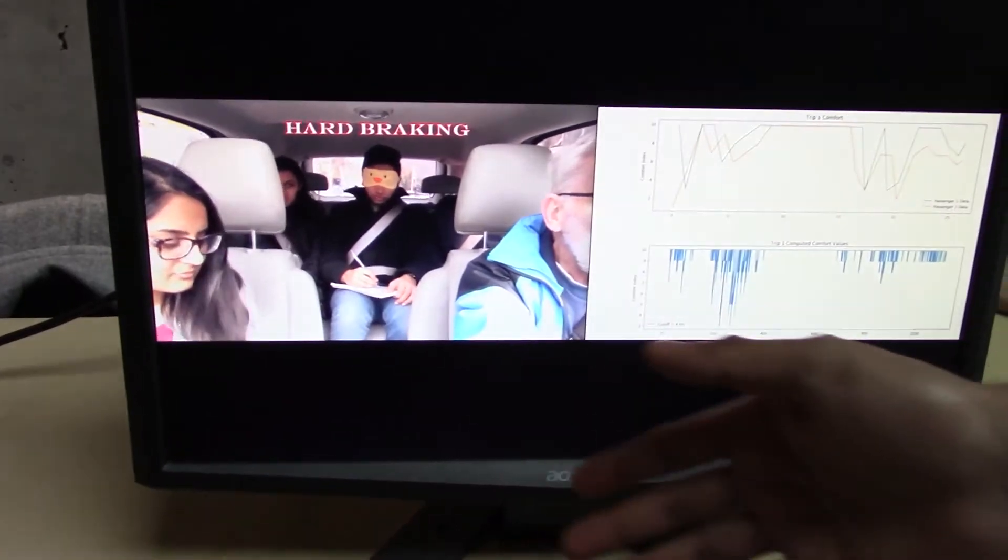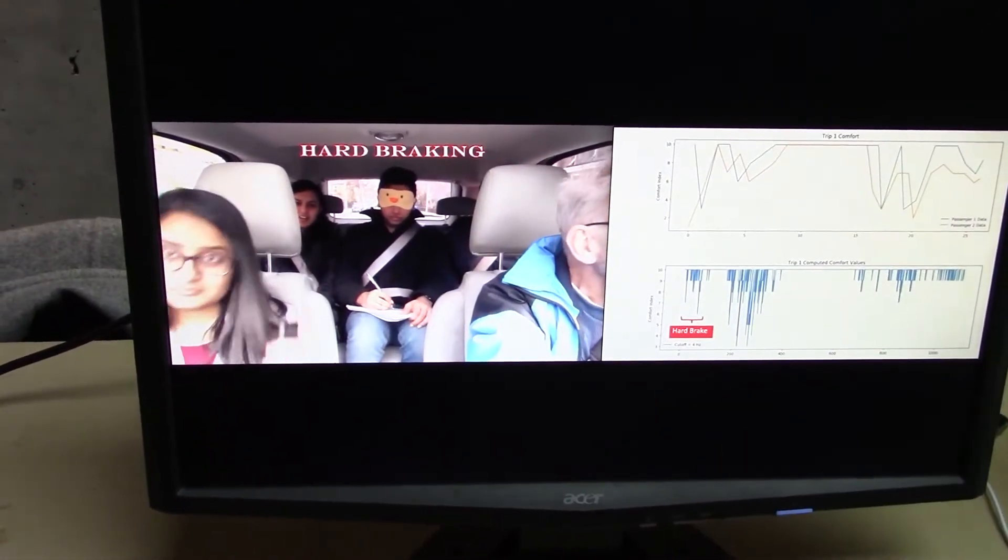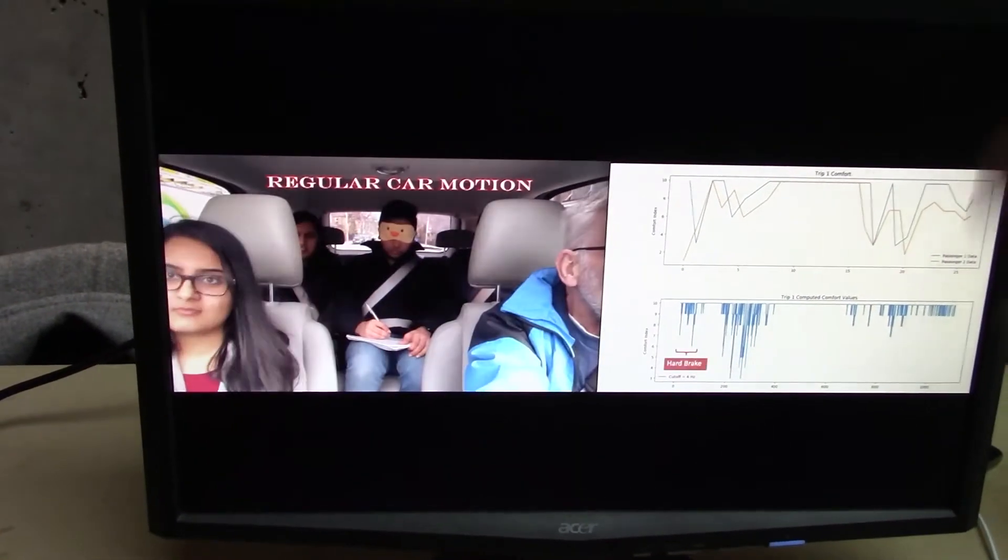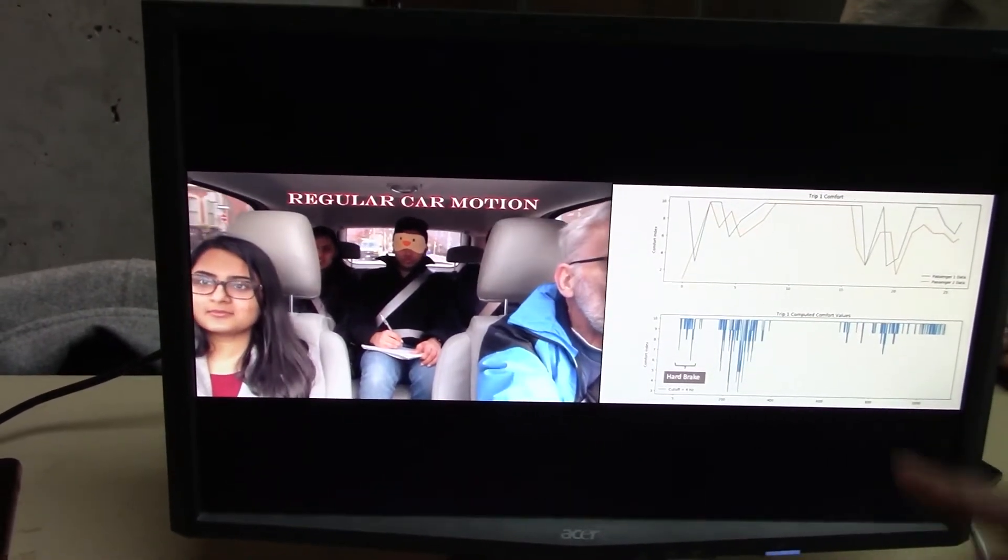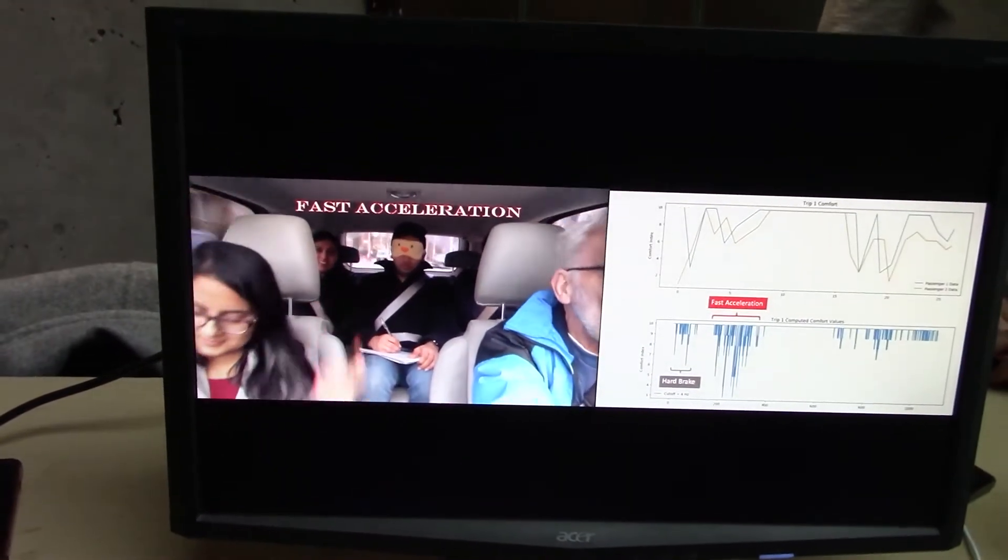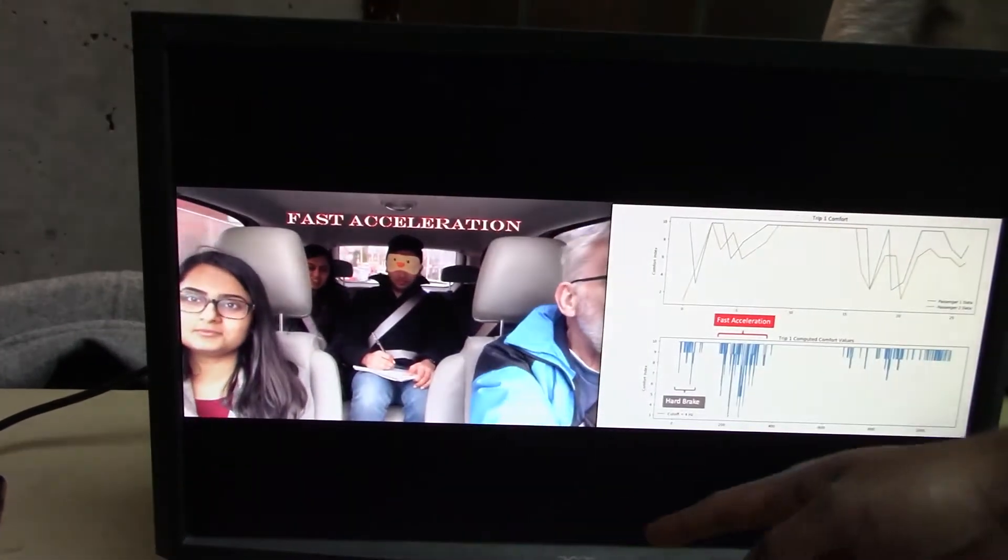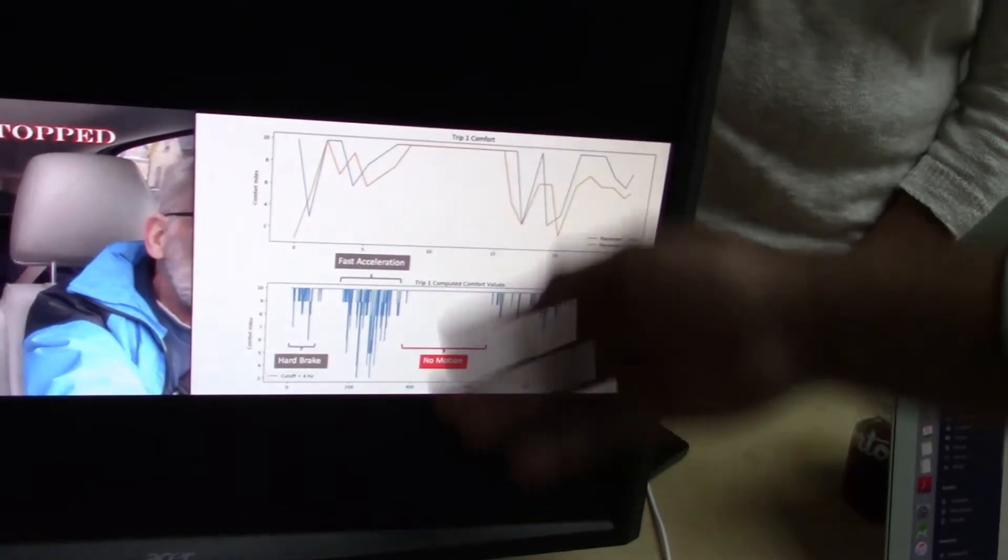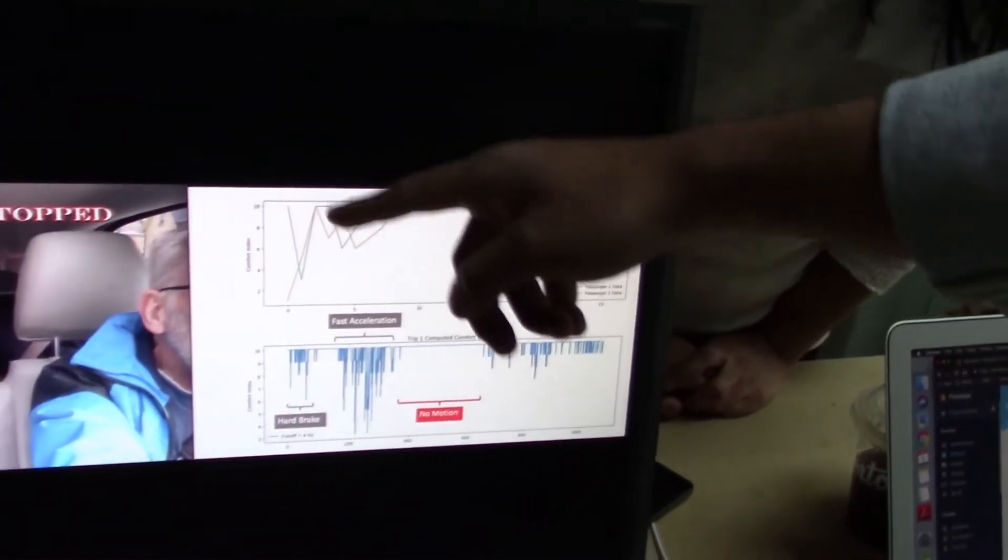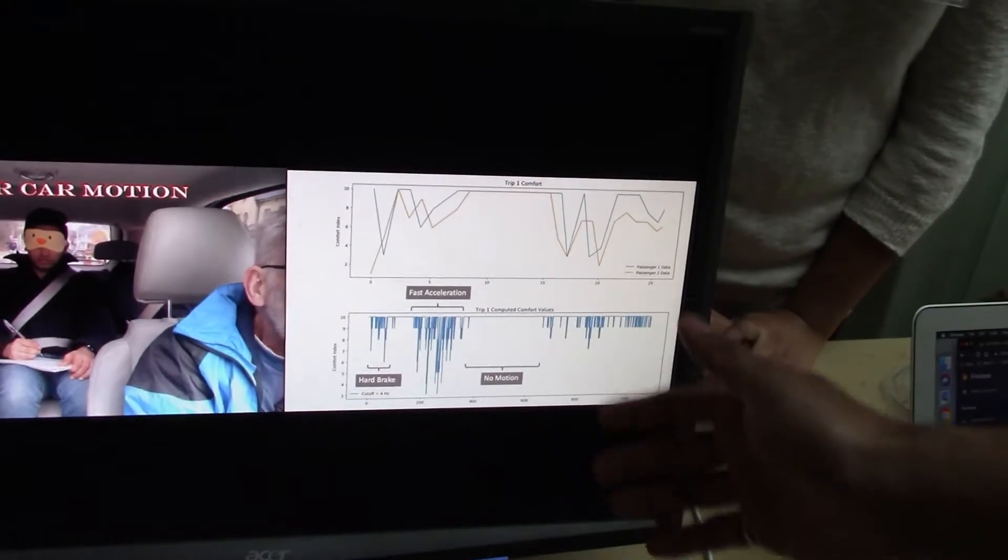As you can see the passengers are blindfolded so their visual perception couldn't affect their judgment and we had them write down values of comfort with respect to certain actions the driver is doing. Here you have the fast acceleration occurring and you can see the jerk experienced by the vehicle and above you can see the comfort that was quantified by the passengers on a scale of zero to ten.